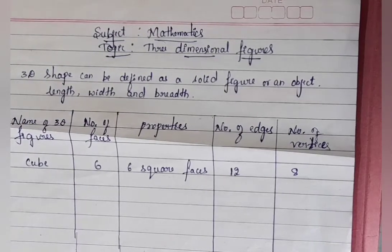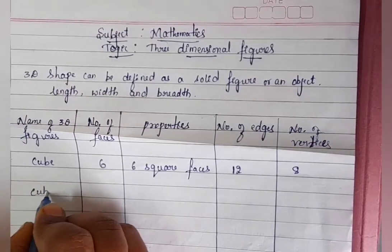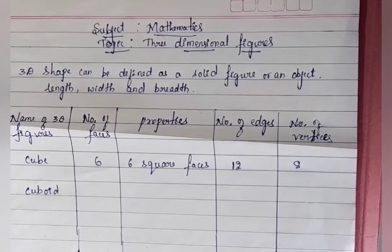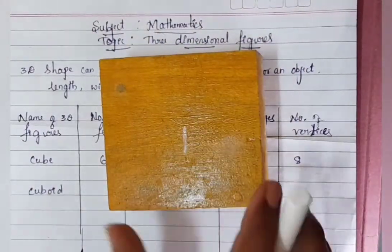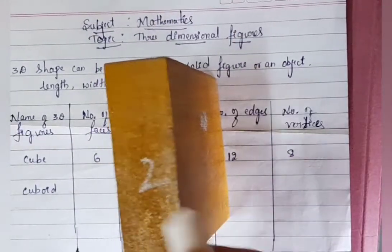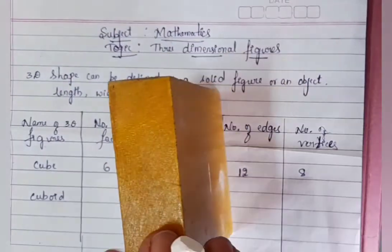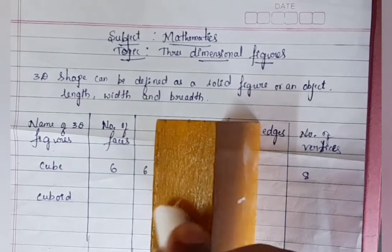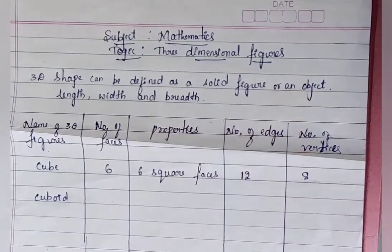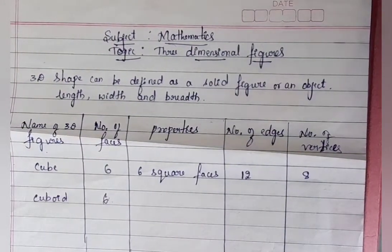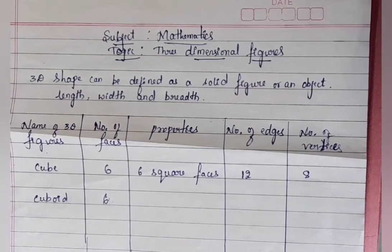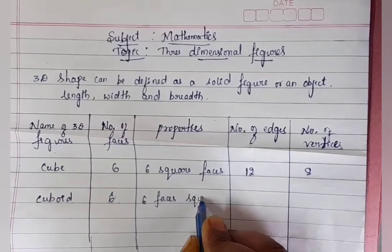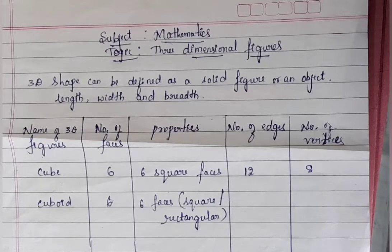The next figure is the cuboid. Count the number of faces — faces means flat surfaces. One, two, three, four, five, six. The number of faces in a cuboid is six. Its properties are six faces — square or rectangle.